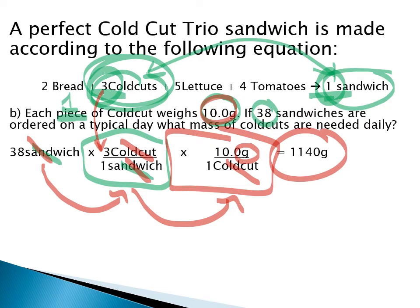For significant digits, we have a measured value with three significant figures, so our answer should be in three significant figures. Rather than use scientific notation — what cold cut company is going to use scientific notation? — we use the metric system and convert to kilograms, giving us a nice readable answer with three significant figures.